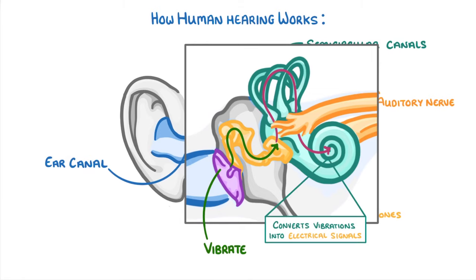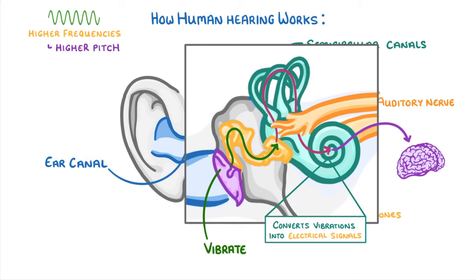The cochlea then converts the vibrations into electrical signals, and these electrical signals get sent along the auditory nerve to your brain, at which point your brain is able to interpret the signals as sounds, with higher frequencies being interpreted as higher pitches, and more intense signals being interpreted as being louder.